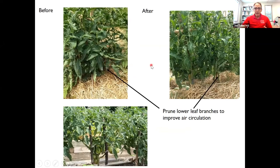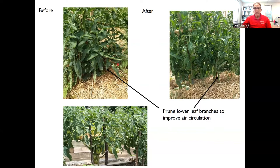Here are shots showing the before and after of removing lower leaf branches. In the before photo, you can see foliage all the way down to the ground with leaf shoots at more than a 90-degree angle tending to move toward the ground. On the right, you can see the difference — we've removed the lower three, four, or five leaf branches after fruiting has begun and the plants are well established and healthy. That's going to really improve air circulation. And in the lower left, you can see it looks much more dramatic with no lower leaf branches at all.